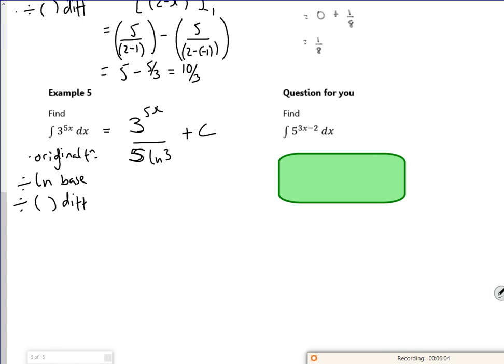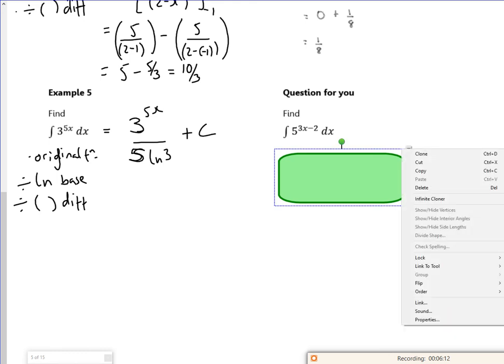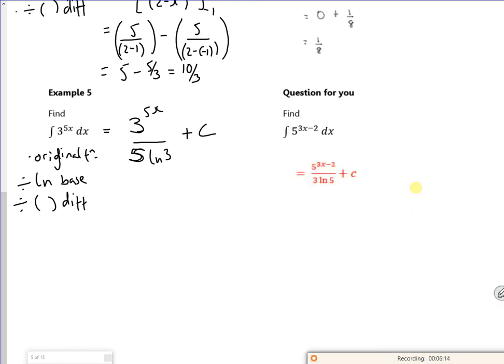So for this one, the original function, 5 to the 3x minus 2, divided by log of 5 times by the 3 on the bottom. So the original function, log of the base log 5, with the bracket differentiated on the bottom. We'll do loads of these, loads and loads of differentiating.